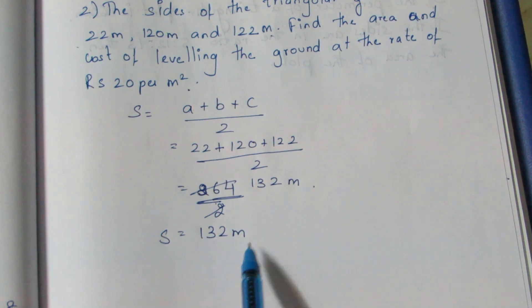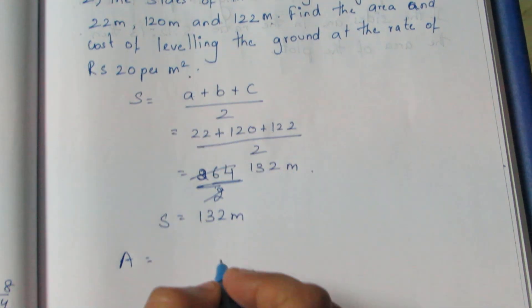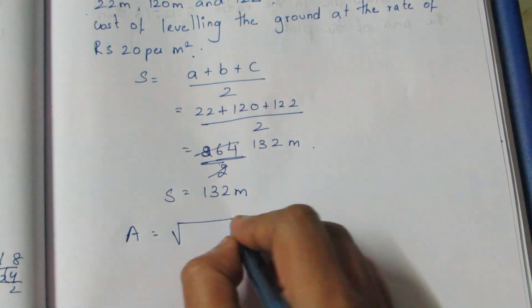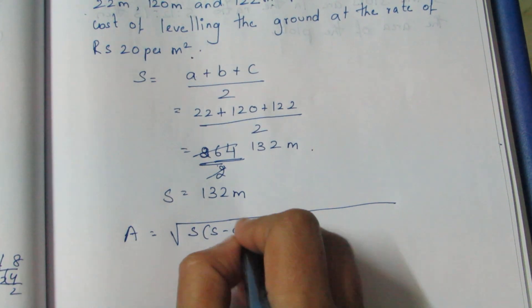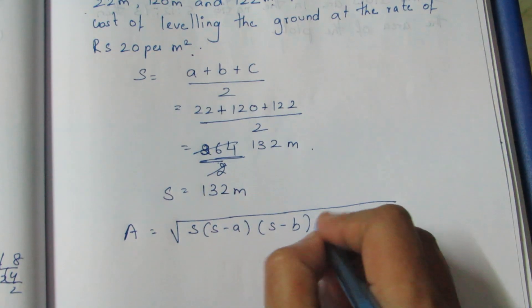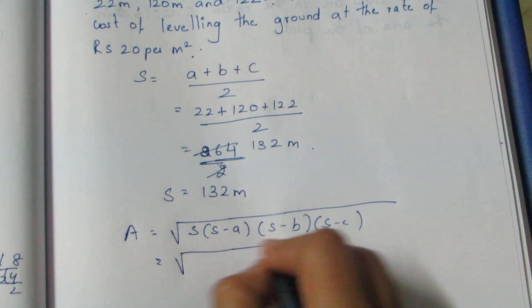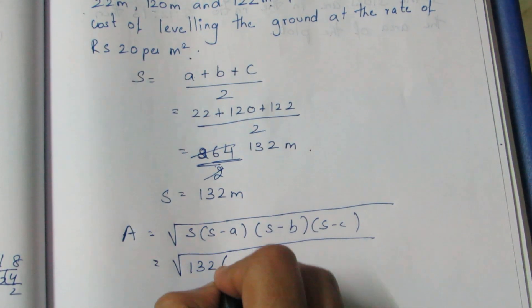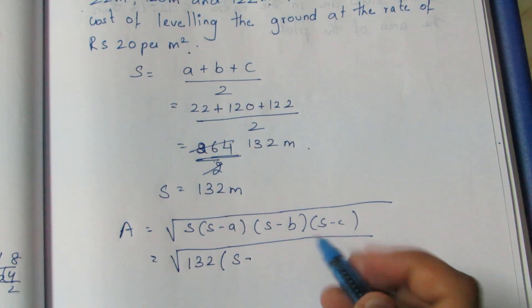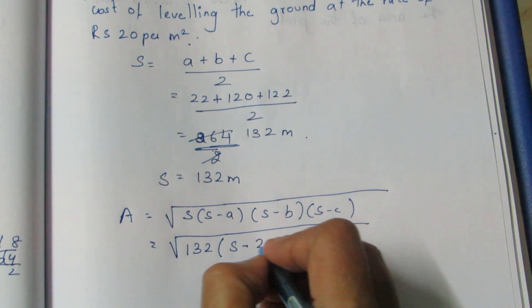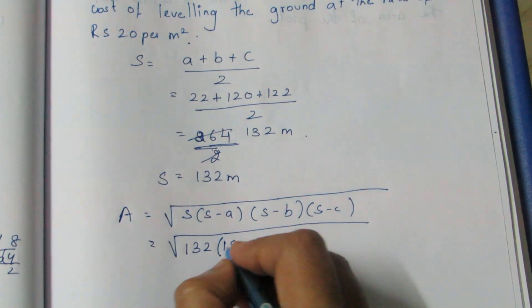Now we put S into the area of a triangle formula: Area equals root of S into S minus A into S minus B into S minus C. The value of S is 132, so we have 132 into S minus A, S minus B, S minus C.